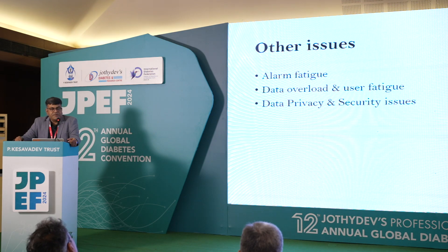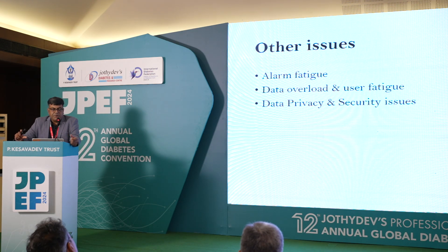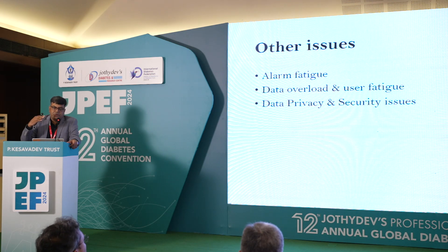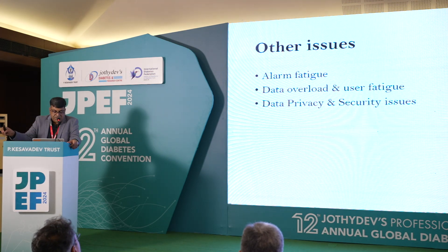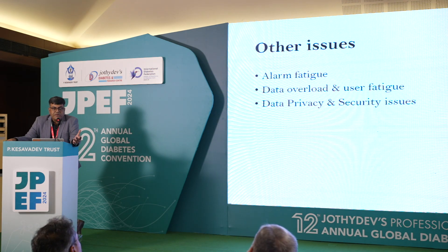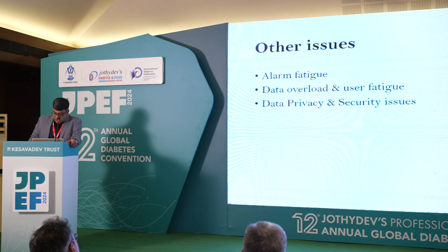Some devices have alarms, and the patient might be repeatedly disturbed by them. This can be adjusted by setting the target range. For example, if settings are 70 to 180 mg/dL, every time sugar is above 180 the alarm will ring — that may not be necessary for a type 2 patient who doesn't need very tight control. For such patients, you can keep the settings from 70 to 200 mg/dL. Data workload can be an issue for some patients, and data privacy and security issues exist — all data can be uploaded, so passwords should be kept secure to prevent data breaches.